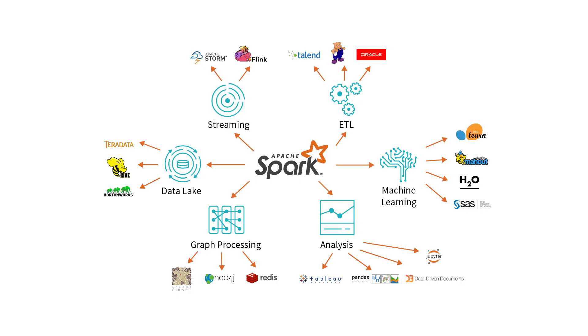Let's start with importing our data. Apache Spark initially rose to popularity because it was able to connect to a variety of different data sources. That runs the gambit from traditional databases like Postgres, SQL Server, and MySQL, to message brokers such as Kafka and Kinesis, to distributed systems including Cassandra and Redshift, to data warehouses like Hive, and to a number of different file types including CSVs, Parquet, and Avro.